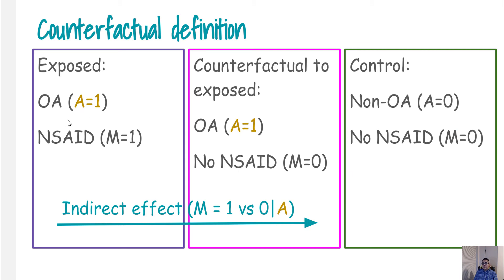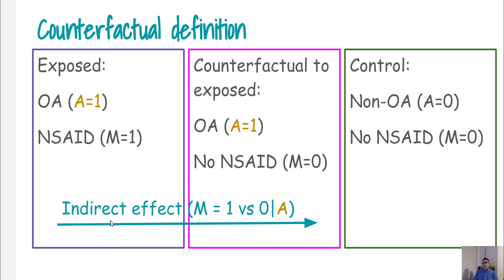For the indirect effect, we fix our A value. The indirect effect is the effect going through the mediator. We fix the A value and allow M to vary from one to zero. This is the indirect effect — the path that does not go directly from A to outcome Y, but goes through M.